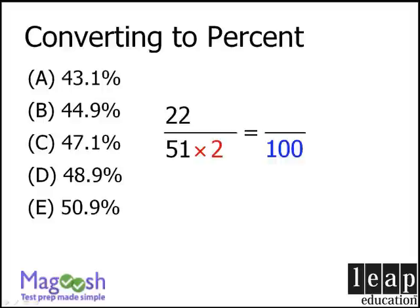Now, 51 times 2 is greater than 100. 51 times 2 equals 102. So we want to multiply 51 by a number slightly less than 2. We'll use this notation.